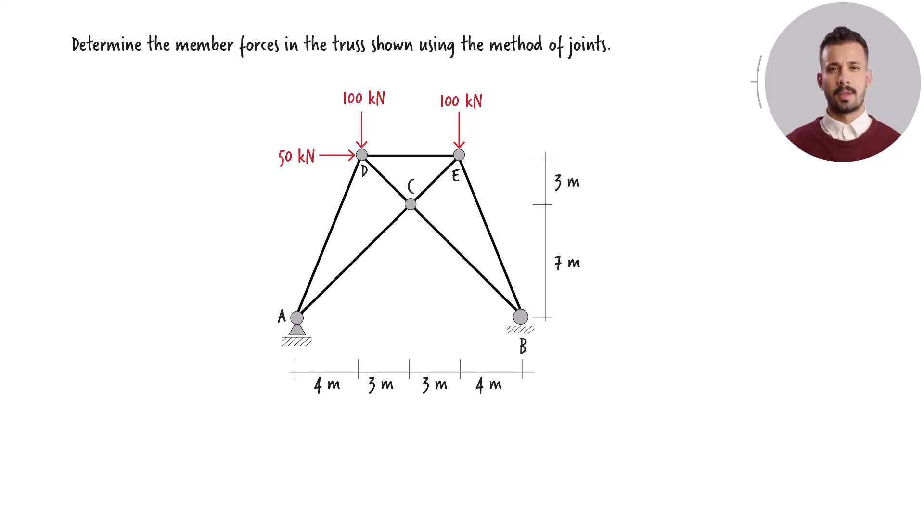Consider this statically determinate truss structure. It consists of 7 members and 5 joints. We want to calculate the member forces using the method of joints.